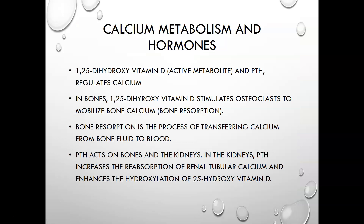1,25-dihydroxyvitamin D is the active metabolite of vitamin D, and along with parathyroid hormone, regulates calcium. In bones, 1,25-dihydroxyvitamin D stimulates osteoclasts to mobilize bone calcium through bone resorption — the process of transferring calcium from bone to blood. Parathyroid hormone acts on bones and kidneys: in the kidneys it increases reabsorption of renal tubular calcium, and it enhances hydroxylation of 25-hydroxyvitamin D into the active form, 1,25-dihydroxyvitamin D.